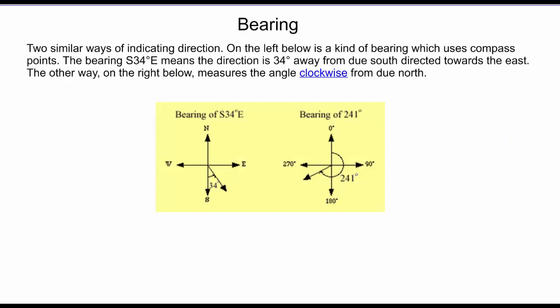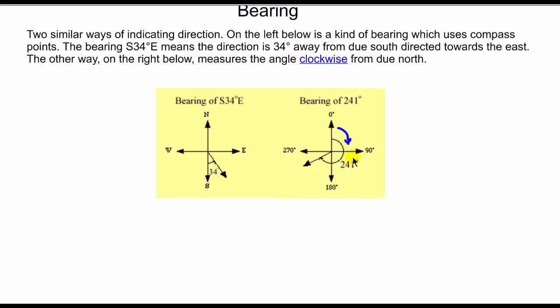Now, next we'll talk about something called bearing, and bearing is a way to measure angles. Bearing is measured from the north, and it's measured in a clockwise fashion. So this is the best picture of this. Now, another way of stating bearing, and in this picture to the right, we have a bearing of 241 degrees, and that's from the north.